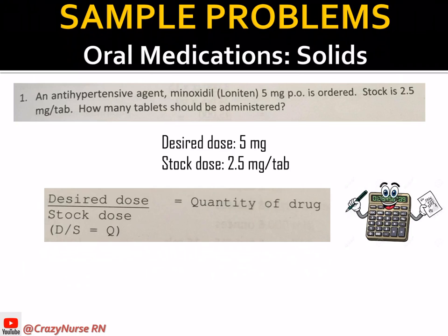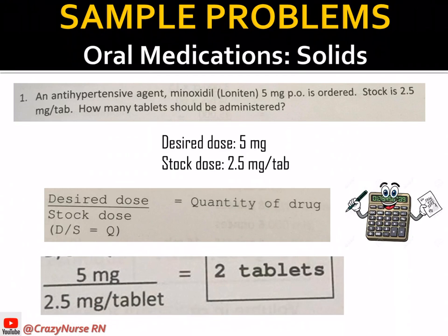We need to know the formula for computing oral medication in solid form. The formula is: desired dose over stock dose equals the quantity of drug — meaning the amount of tablet you will administer to your patient. It is written as D over S equals Q. So we have 5 milligrams as the desired dose over 2.5 milligrams per tablet as the stock dose.